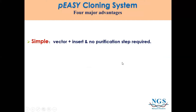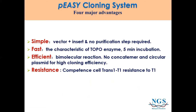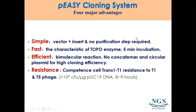Here are the four major advantages of the PEZ cloning system. First, it is simple — just mix the vector and gene of interest, and no purification step is required for the DNA product. Second, it saves time — due to the characteristics of the topo enzyme, only five minutes of incubation time is required. Third, efficiency — because of the bimolecular reaction, no concatemers will be formed, giving high cloning efficiency. Lastly, the competent cell TRANS1-T1 is given free of charge together with the PEZ cloning kit.